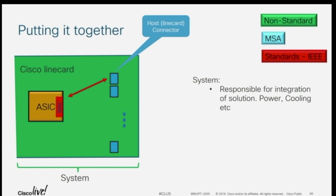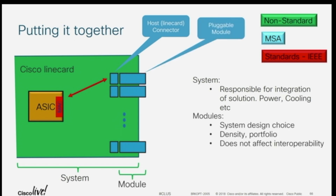Why does this matter? Putting it all together from a Cisco point of view, we're building a system — a solution for our customers. We're responsible for building the line cards. Some things are standardized, like the MAC, which we put inside our ASICs. The electrical interfaces are often defined by the IEEE as well — those are all standards-based. We put connectors on our boards, and we own the power delivery and how to keep it cool. Then you get these modules that plug in, and that's really a choice of the system vendor.